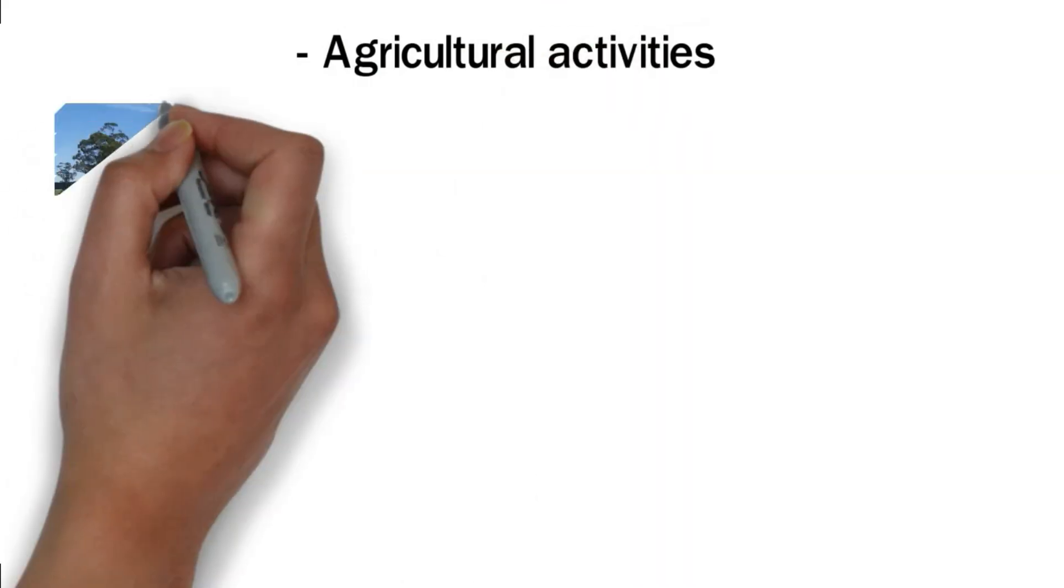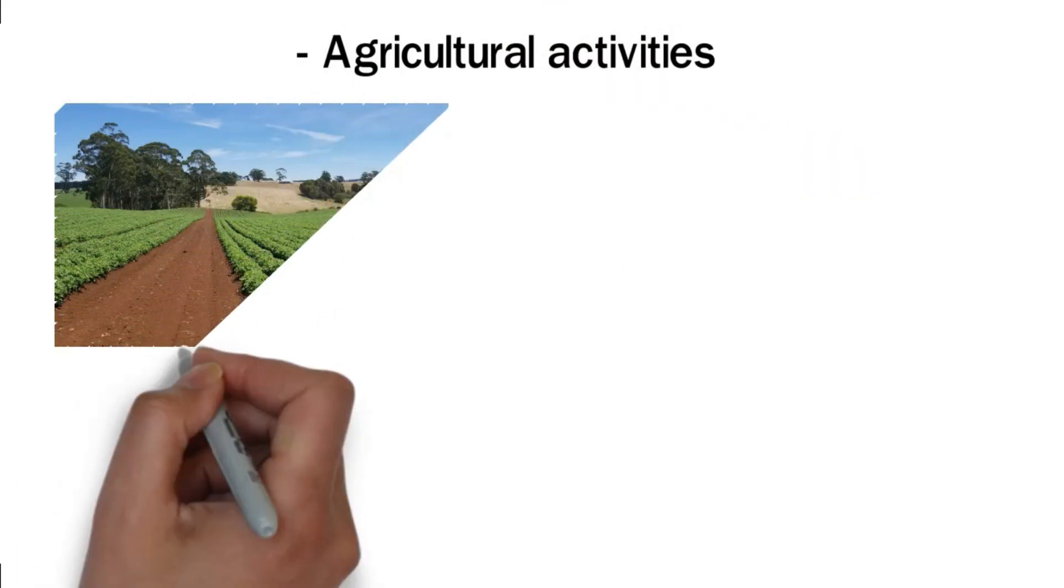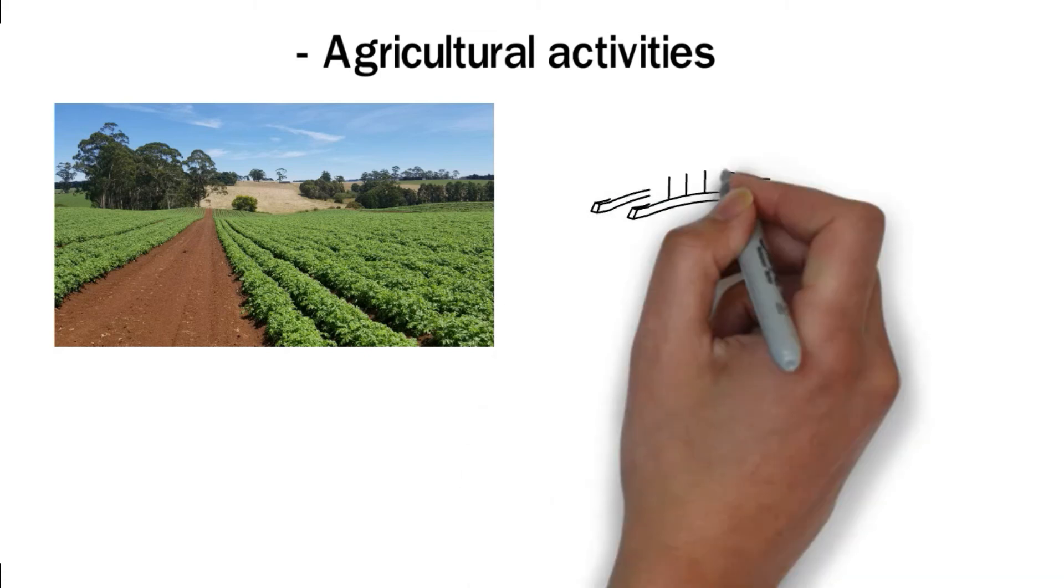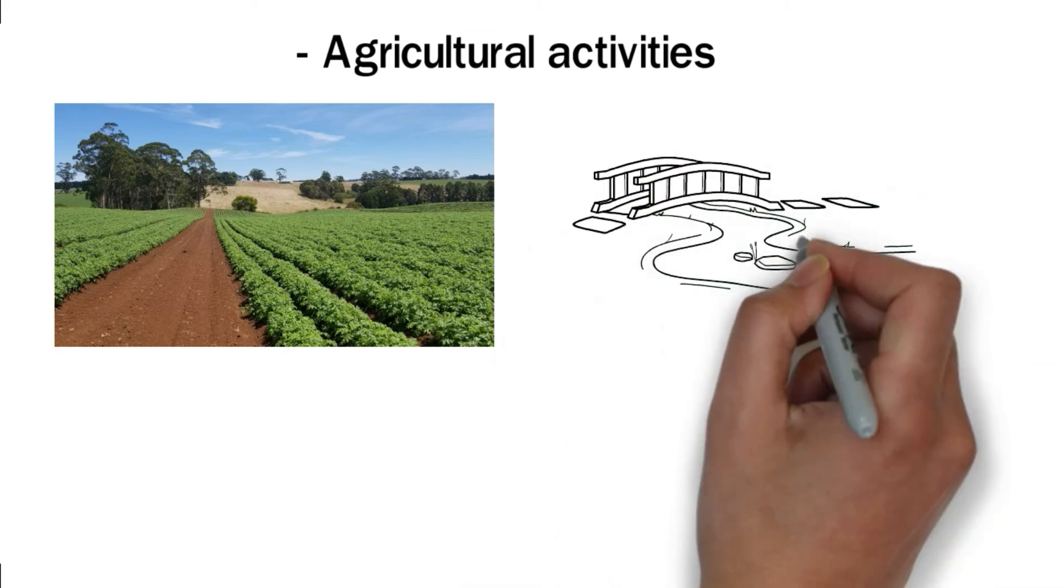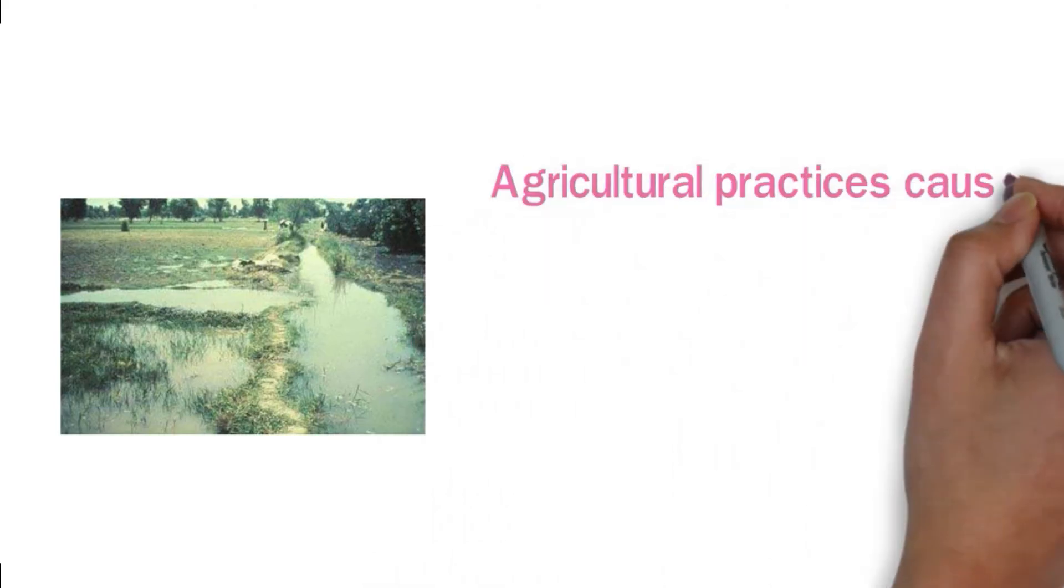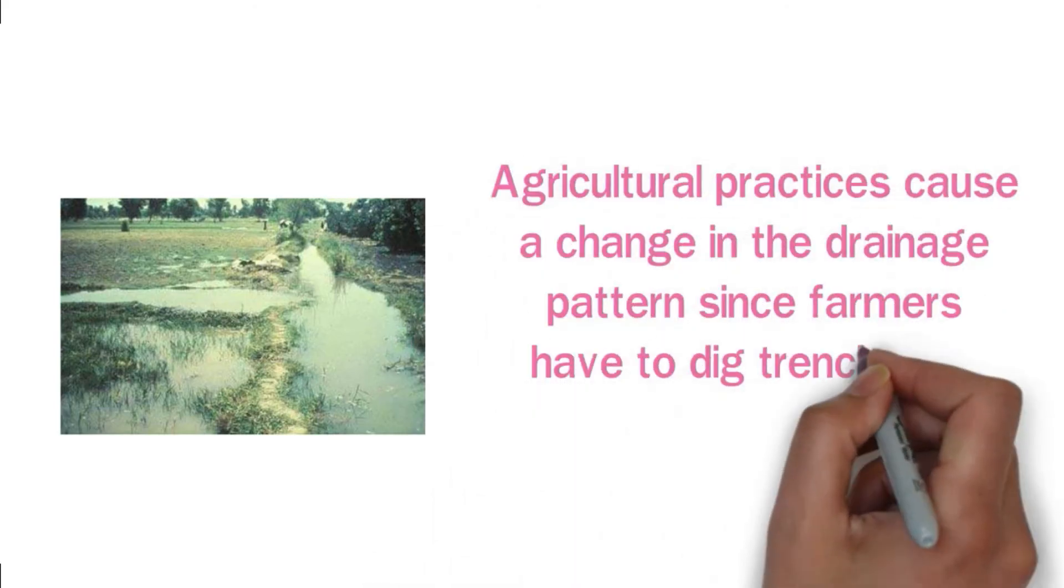Agricultural Activities. People clear away natural vegetation to create space for crops, and this affects the movement of water from plants into the atmosphere due to reduced vegetation cover. A lot of water is also lost through irrigation as it drains rivers and lakes. Poorly maintained irrigation systems can cause surface runoffs. Agricultural processes cause a change in the drainage pattern since farmers have to dig trenches to meet their drainage needs.